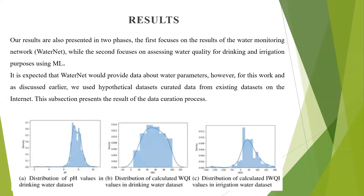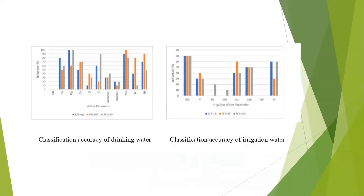Next, results. Our results are presented in two phases. The first phase focuses on the results of the water monitoring network, while the second focuses on assessing water quality for drinking and irrigation purposes using ML. It is expected that WaterNet would provide data about water parameters. However, for this work, we used hypothetical datasets collected from existing datasets on the internet. The subsection presents the results of the data collection process.